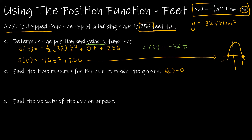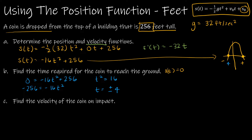Setting s of t equal to zero: zero equals negative 16t squared plus 256. Subtracting 256 from each side gives negative 256 equals negative 16t squared. Dividing each side by negative 16 gives t squared equals 16. Taking the square root gives two solutions: t equals negative four and t equals positive four.